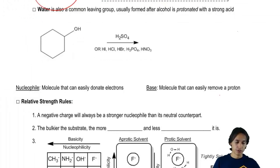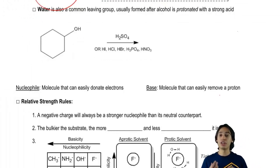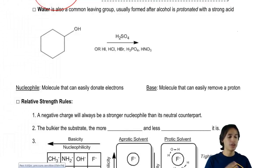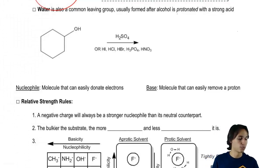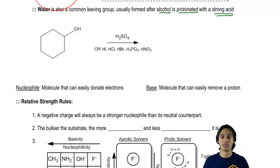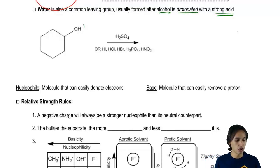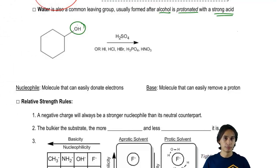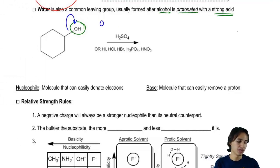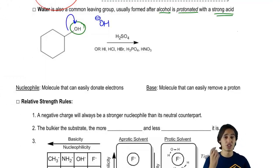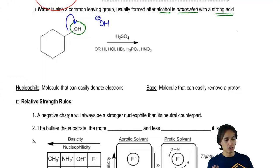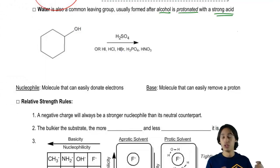The next leaving group I want to talk about is water. Water is actually a pretty common leaving group that we're going to use soon — we haven't used it yet. The way we get water as a leaving group is to protonate an alcohol with a strong acid. Is alcohol typically a good leaving group? No — once you kick off that O, you get OH⁻, which is very unstable and a really strong base. So that's not a good leaving group on its own. But if you protonate the alcohol first with a strong acid like sulfuric acid or HCl, it changes things.